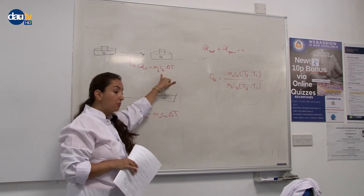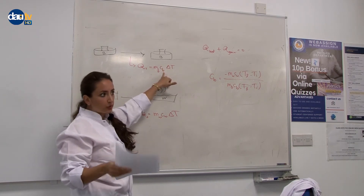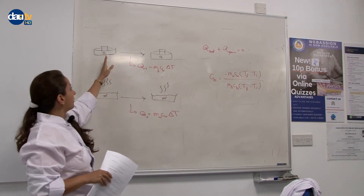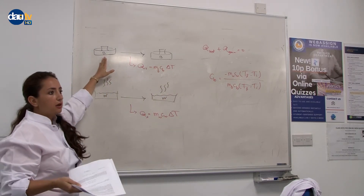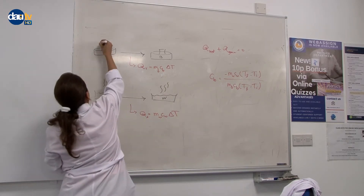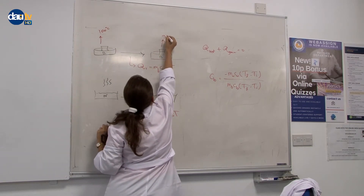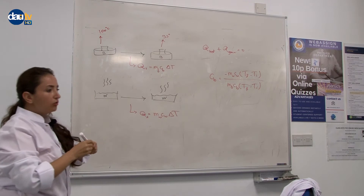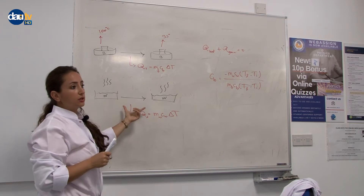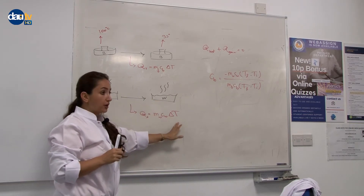Q is equal to M of B — mass of brass or iron, it doesn't matter — times the specific heat of iron or brass, and the change of temperature. For example, brass started at around 100 degrees and changed to 33 degrees. So here only the temperature changed, not the phase.